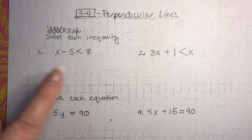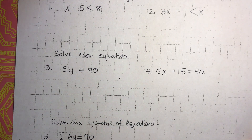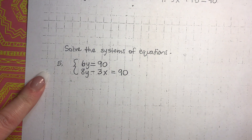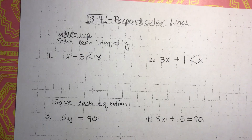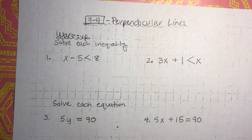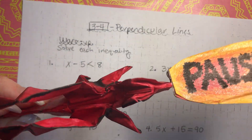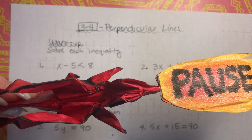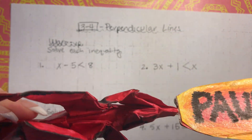For 1 and 2, you're going to solve the inequalities. For 3 and 4, you're going to solve the equation. And then for 5, you're going to solve the system of equations. Go ahead and work out all of those problems. When you get done, press play and we will go over the answers together.